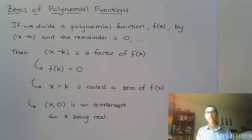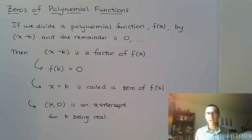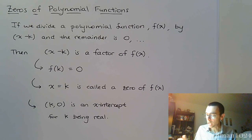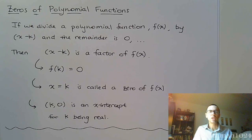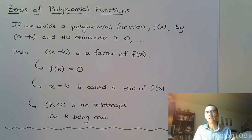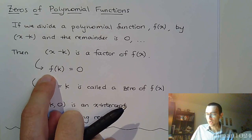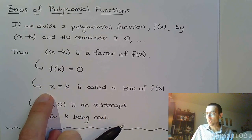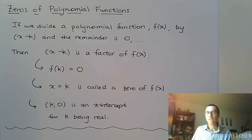It's an x-intercept for k being a real number. As long as k is a real value, you're going to have this as an x-intercept. Because if you have a zero that ends up being imaginary, that's not going to make sense as an x-intercept — when we talk about graphing, we're talking about graphing with real numbers. So if we find a k value through synthetic division that leads to a remainder of zero, we can rewrite it as a factor, we know f of k equals zero, and if k is real, we get an x-intercept.